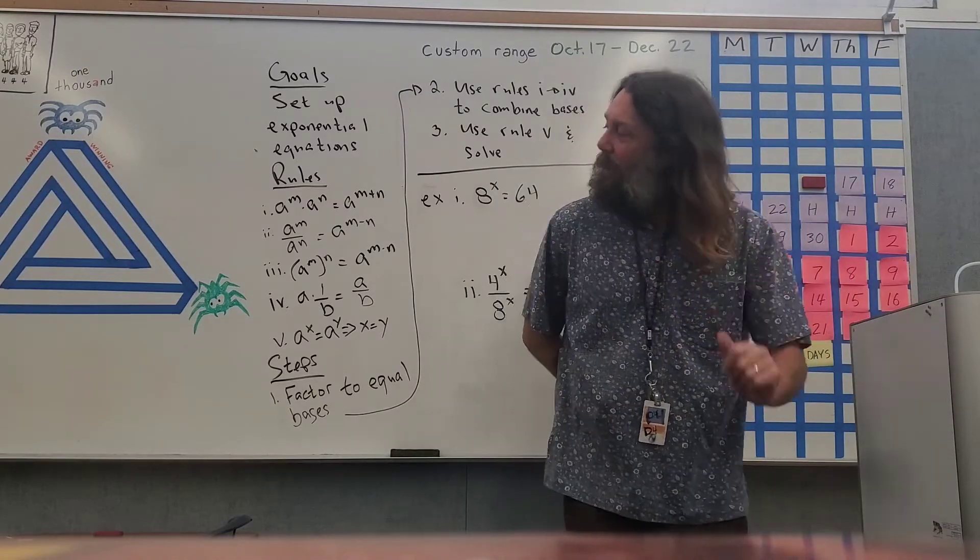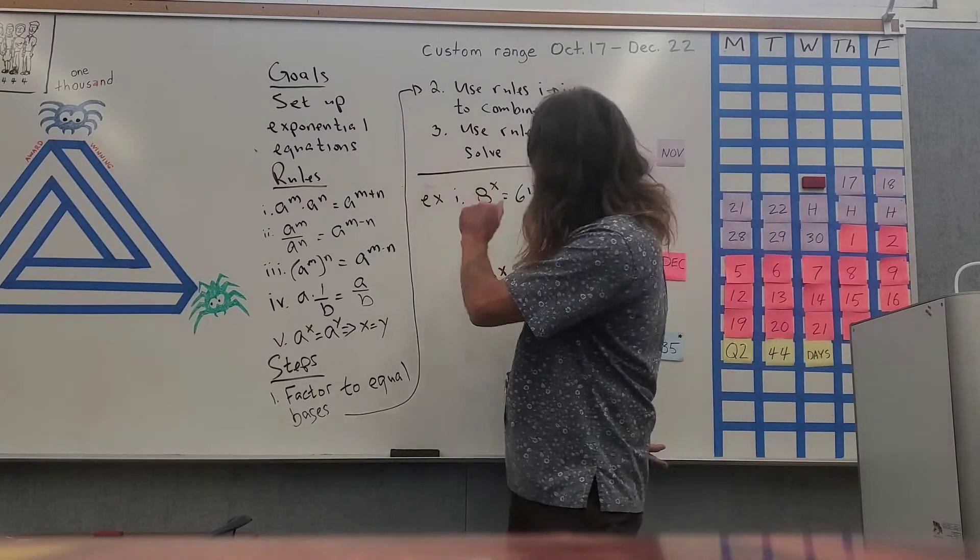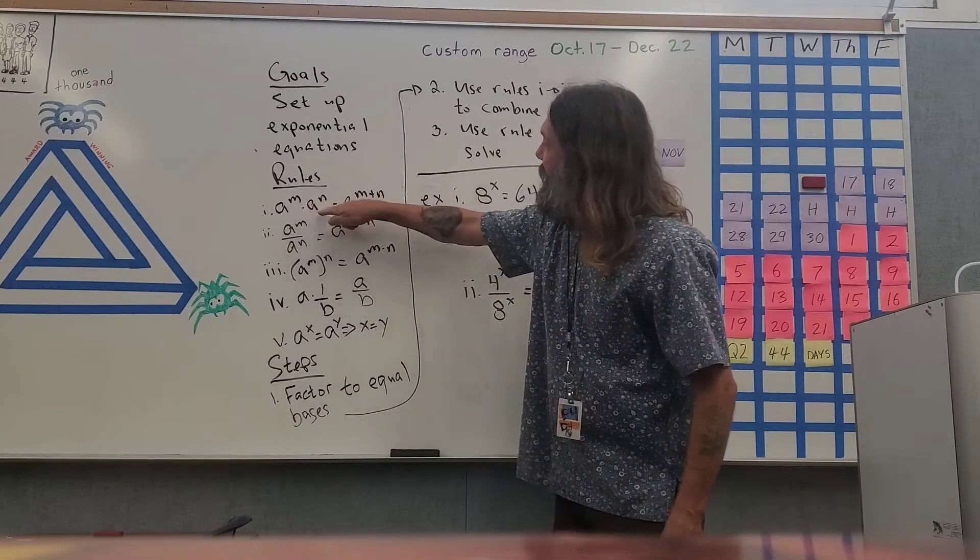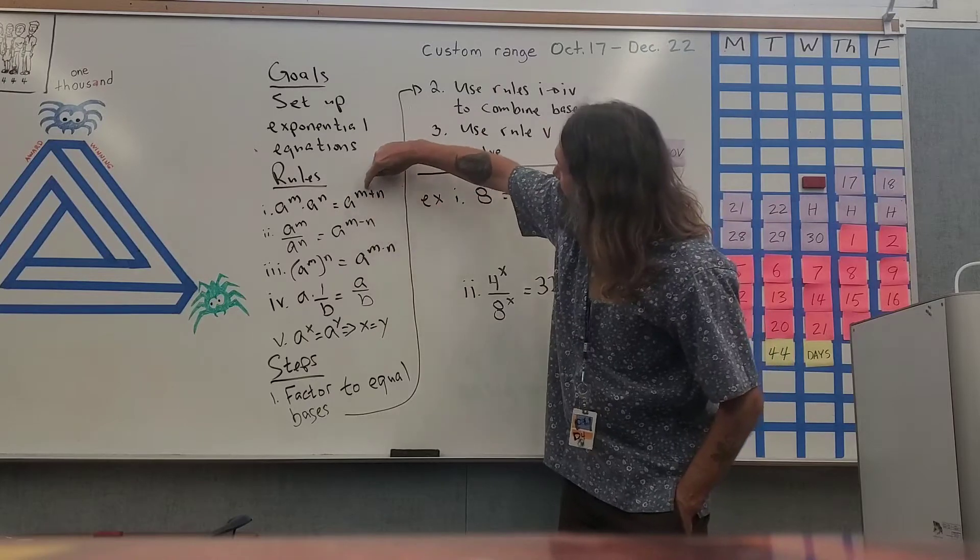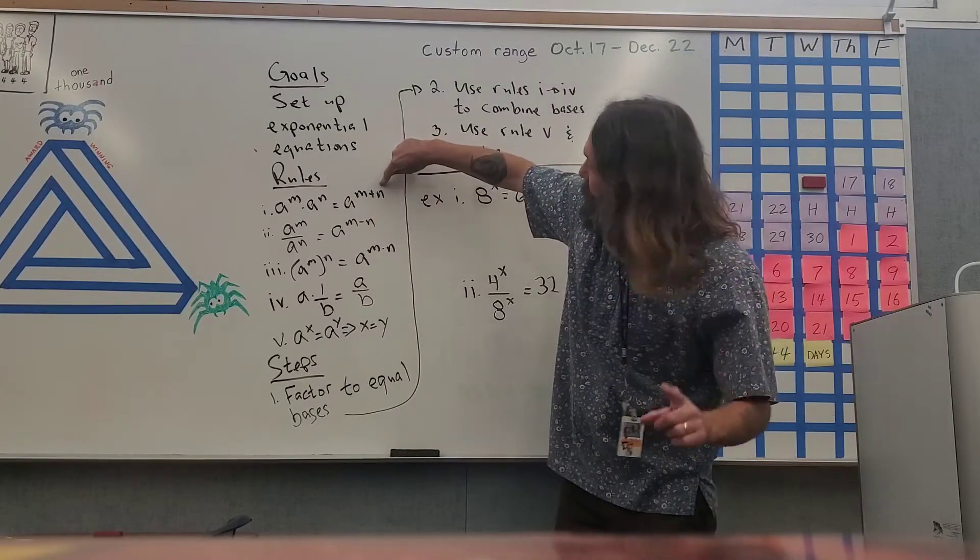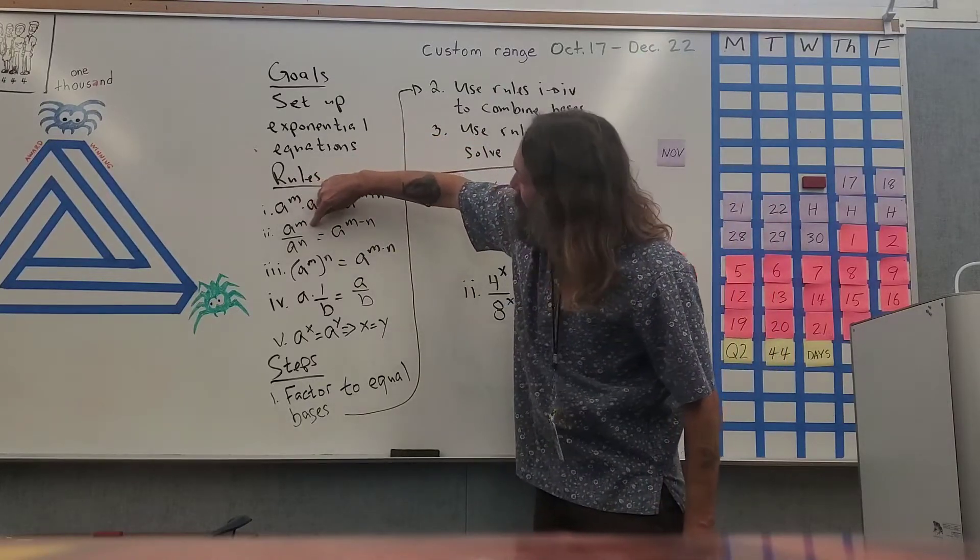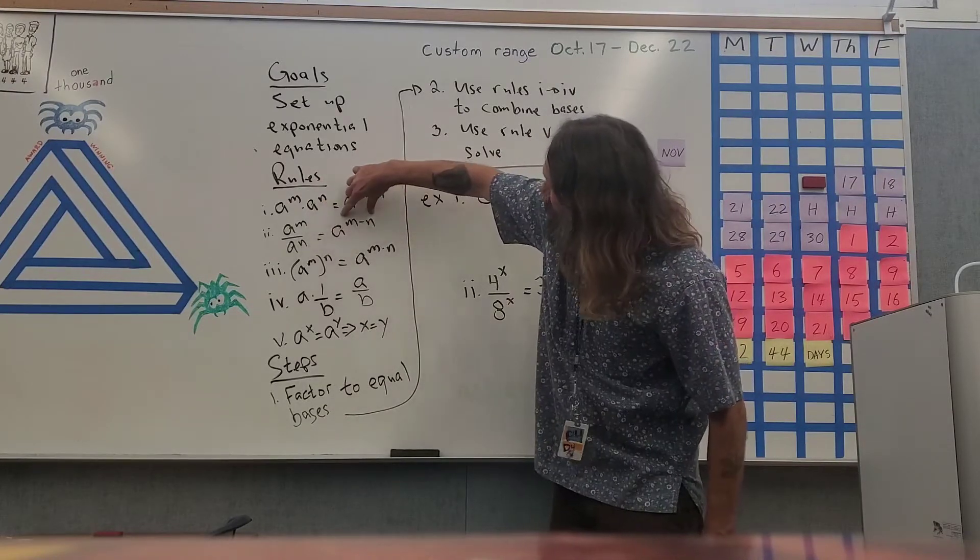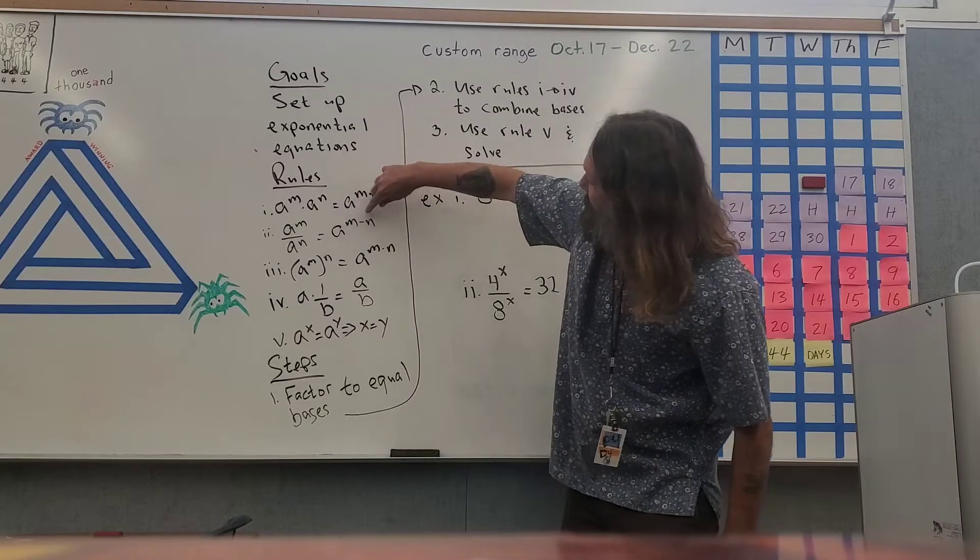All right, there's five rules that we need to know in order to set up exponential equations. The first rule is a to the power m times a to the power n equals a to the power m plus n. The second rule is a to the power m divided by a to the power n is equal to a to the power m minus n.